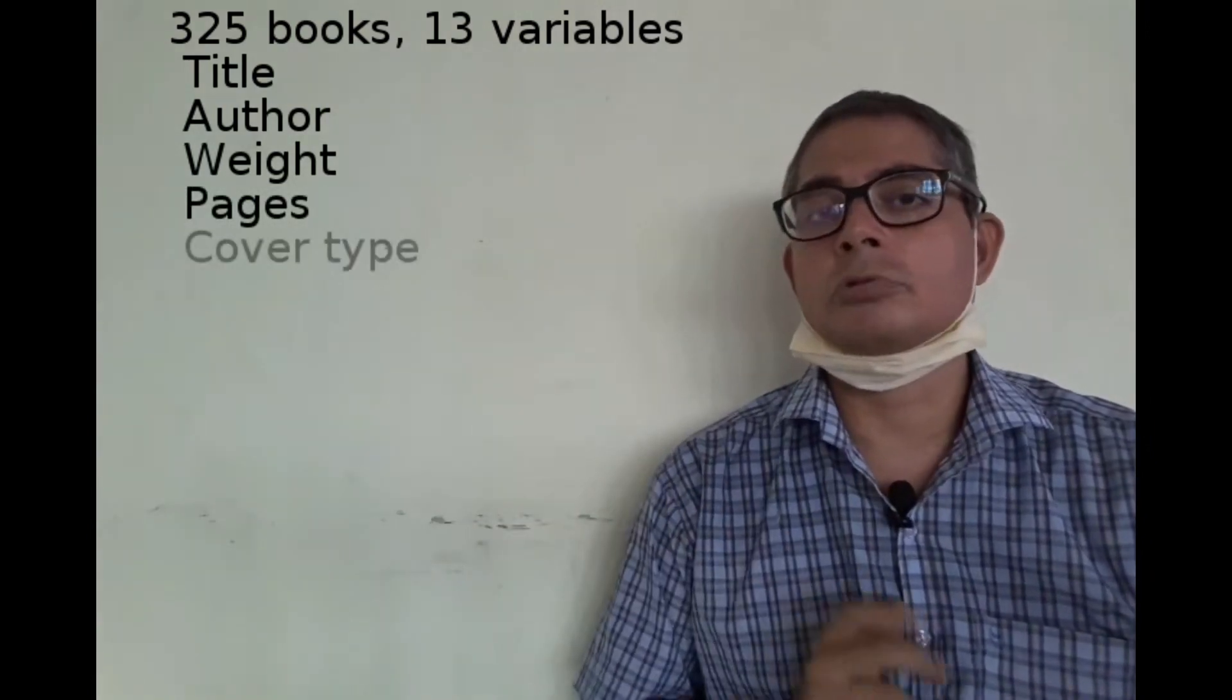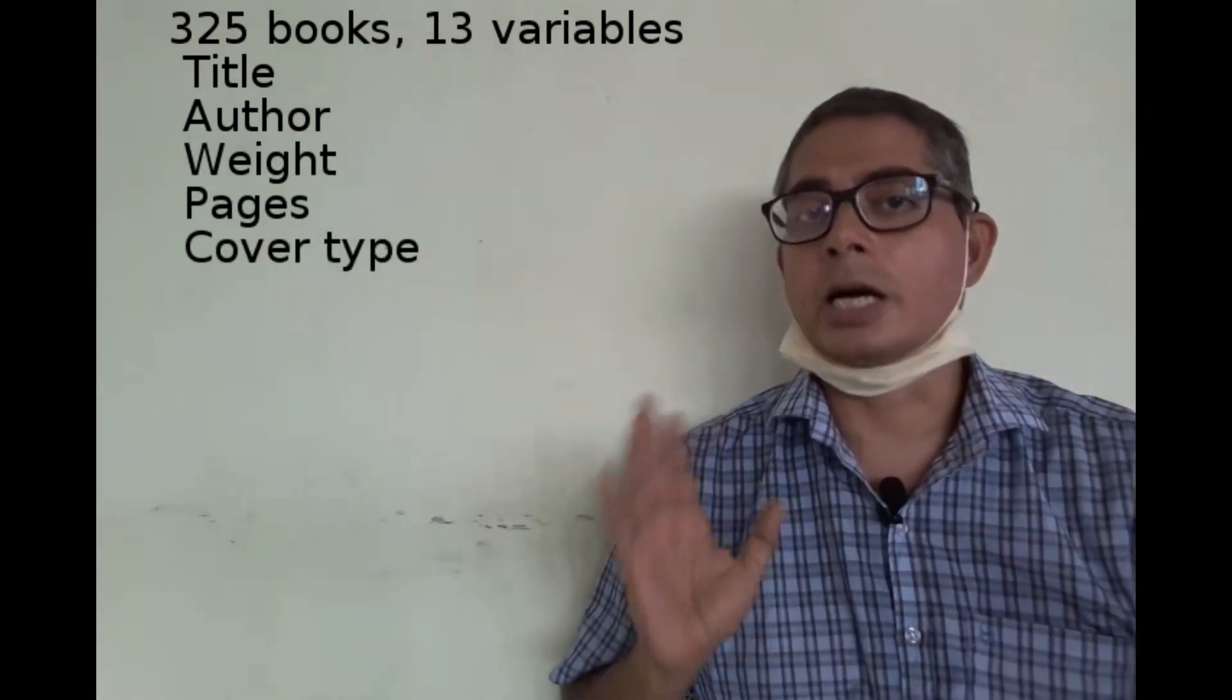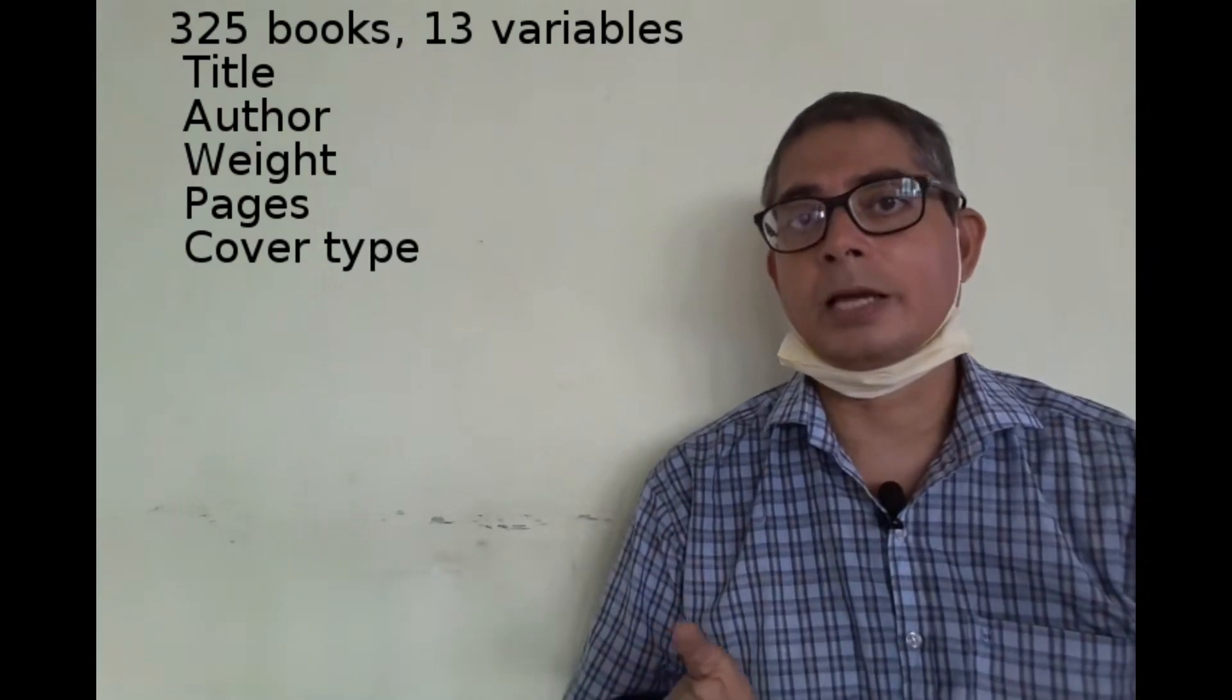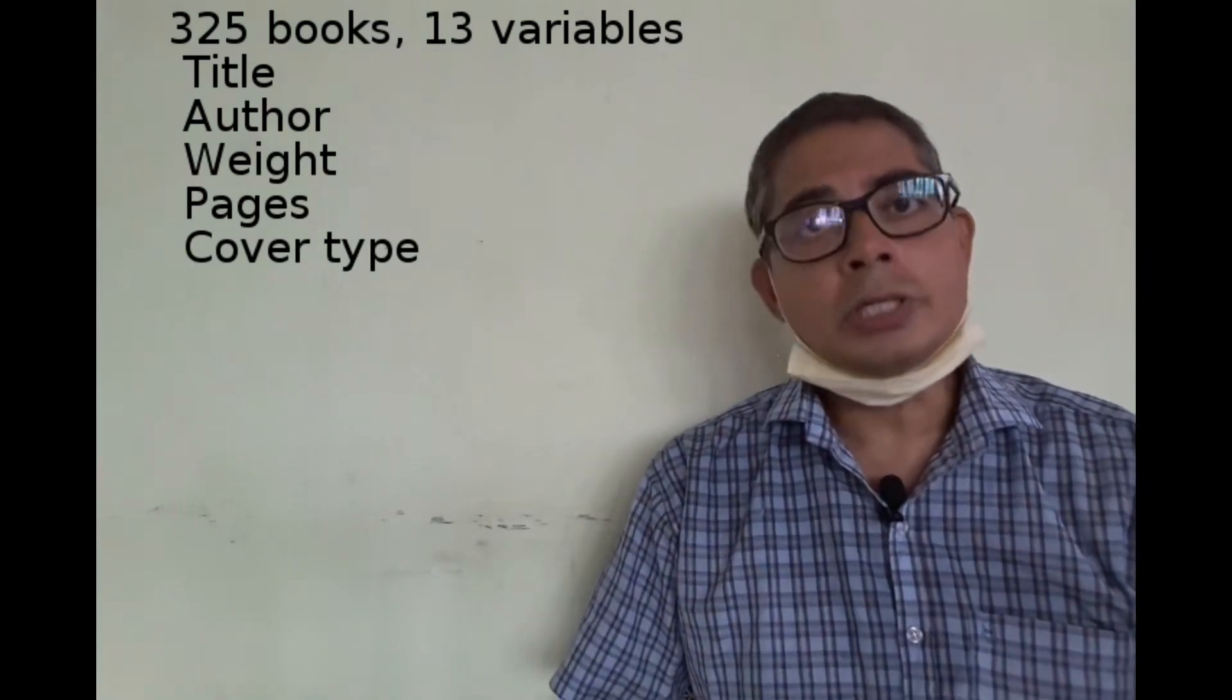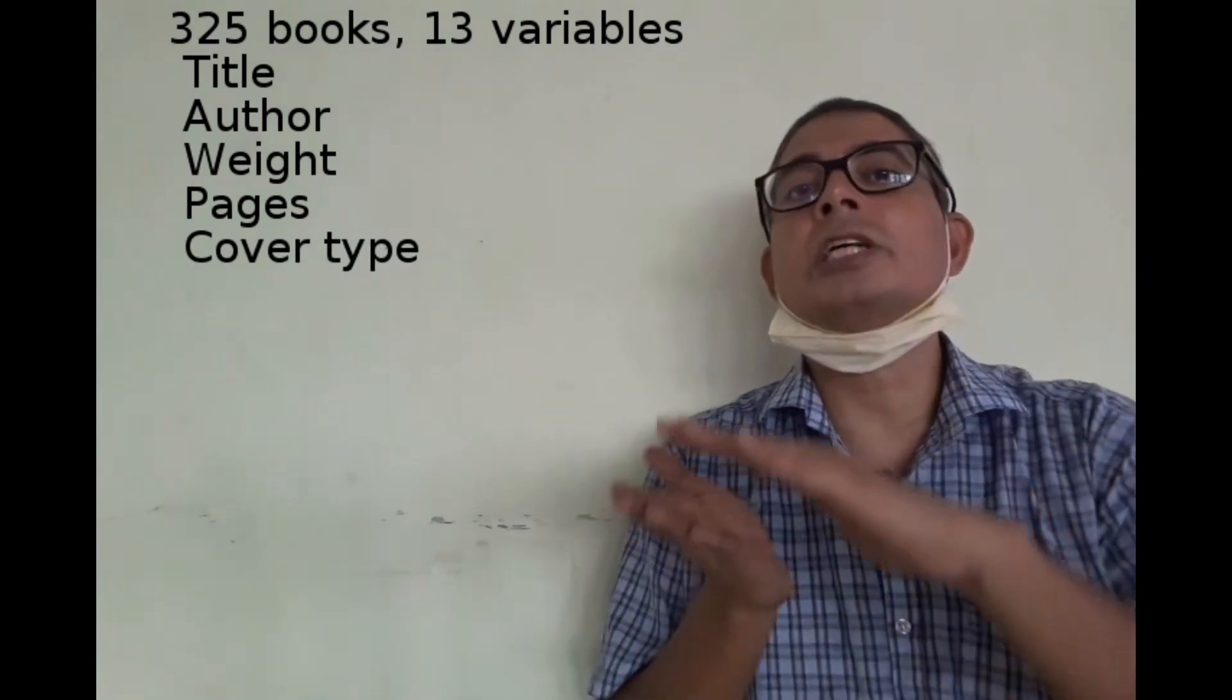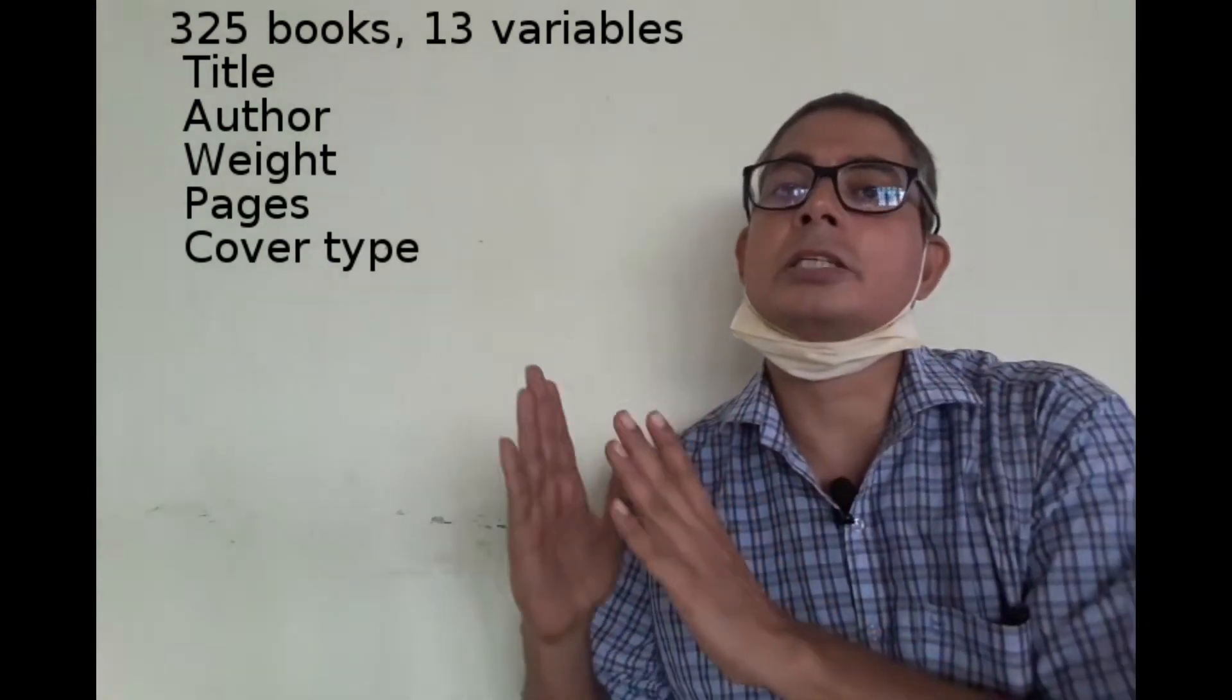how many pages there are in the book and the cover type, whether it's a hardbound book or a paperback, etc. So here the data matrix has 325 rows and 13 columns.